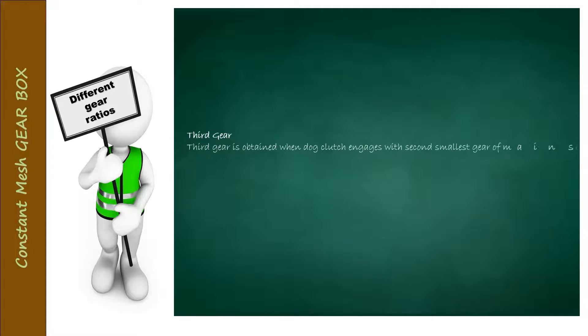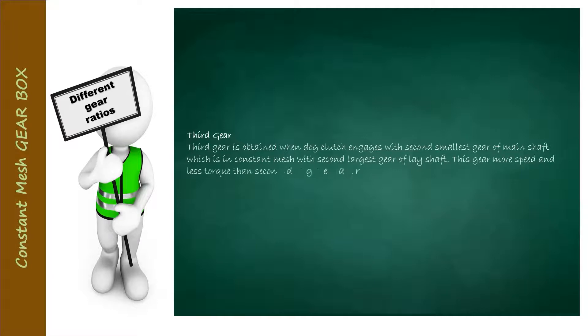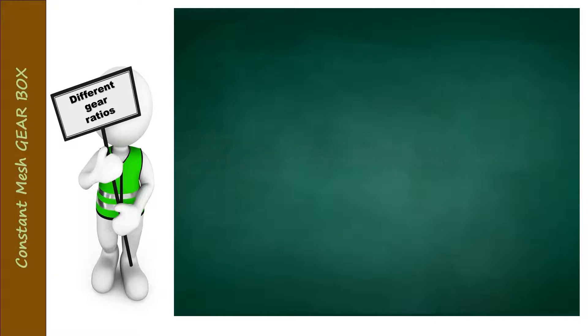Third gear is obtained when the dog clutch engages with the second smallest gear of the main shaft, which is in constant mesh with the second largest gear of the lay shaft. This gear provides more speed and less torque than second gear.